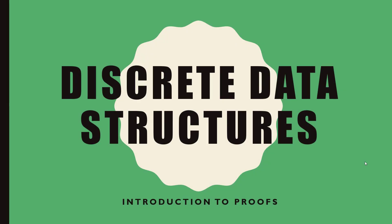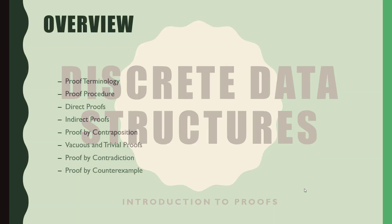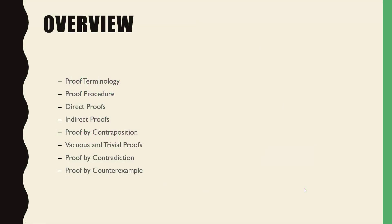All right folks, we're here finally — proofs. Normally in a regular semester this takes about a month before we get there, but we're flying through this material. So let's take a look at some of the stuff we're going to be doing today. We're going to get into some of the terminology, the procedure of what's involved in a proof. Direct proofs, indirect proofs, proof by contraposition, vacuous and trivial proofs, proof by contradiction, proof by counterexample — and hopefully we'll get through all of that today. We're cramming two lectures into one.